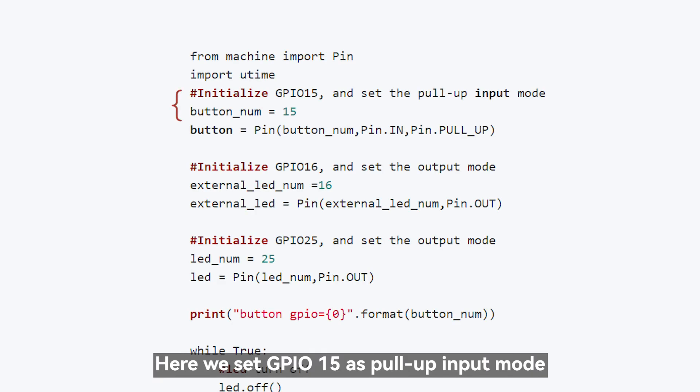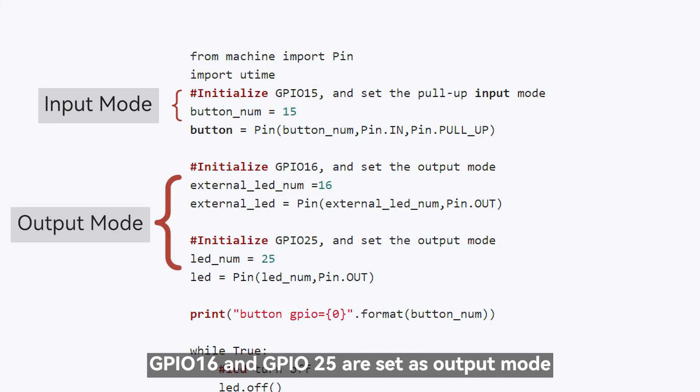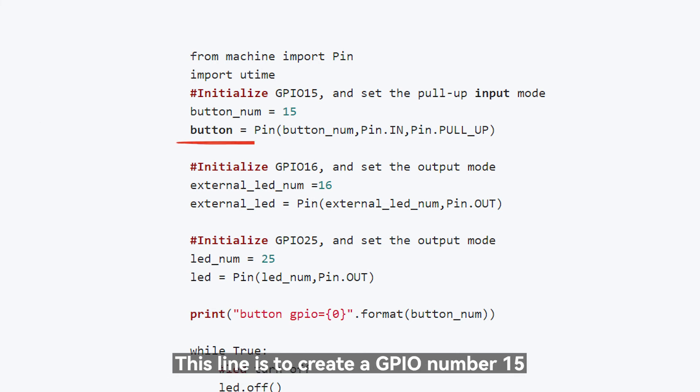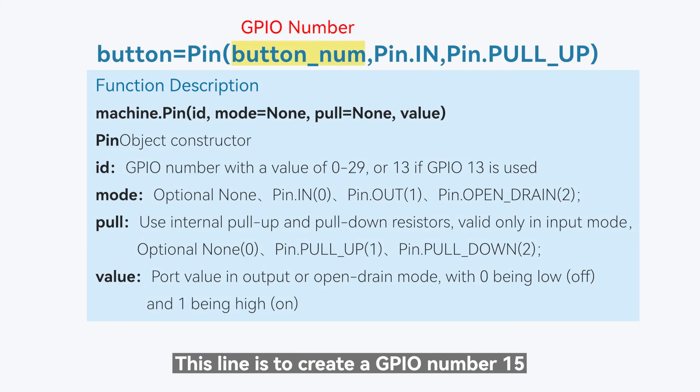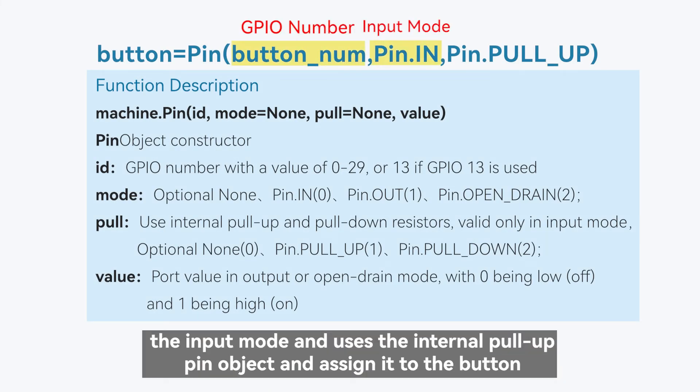Here we set GPIO 15 as pull-up input mode, GPIO 16 and GPIO 25 are set as output mode. Take GPIO 15, the button, as an example. This line is to create a GPIO number 15, the input mode and uses the internal pull-up pin object and assign it to the button.